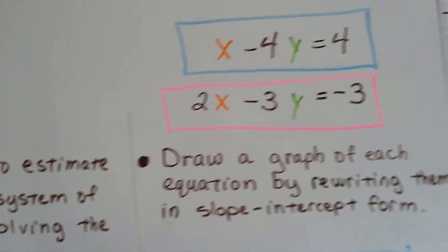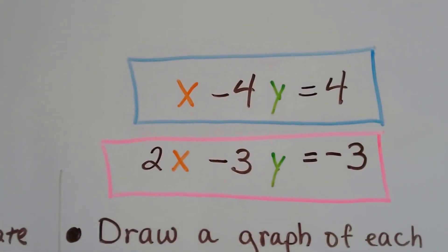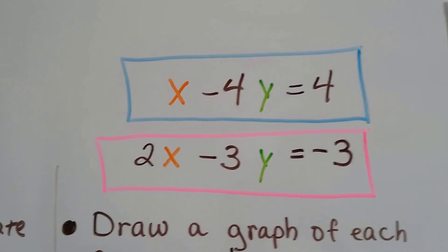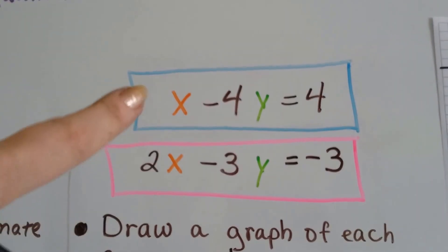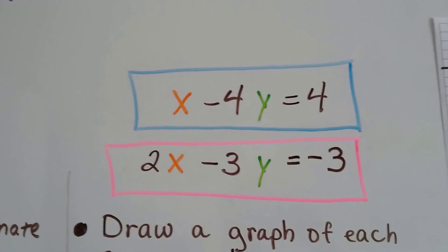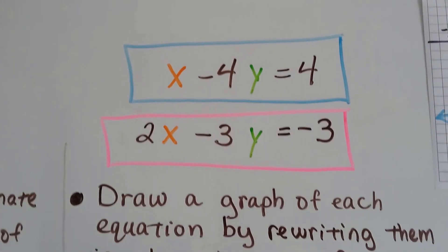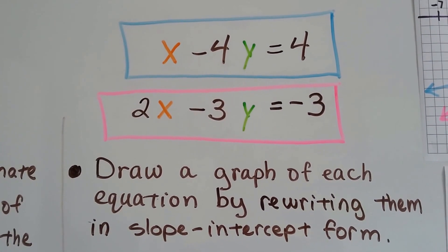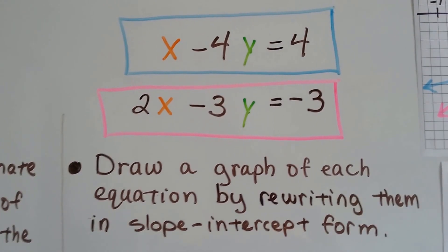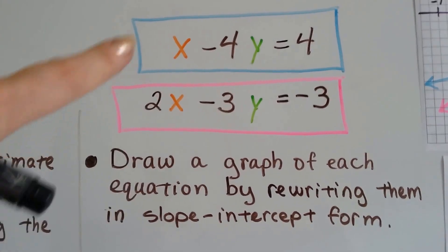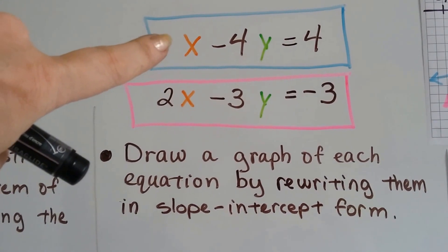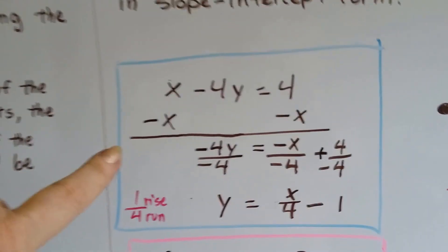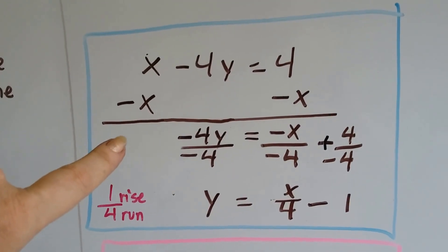So here's our system of equations. These are our two equations. The first thing we're going to do to estimate them and graph them is to rewrite them in slope-intercept form. So let's do it to the blue one. x minus 4y equals 4.